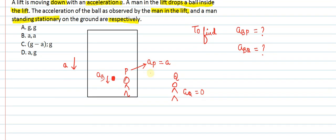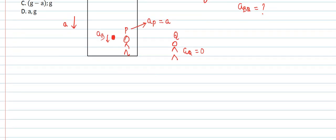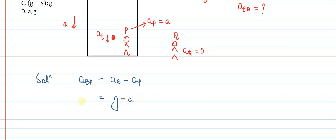Let's start with our solution. The acceleration of ball with respect to P equals the acceleration of ball with respect to ground minus the acceleration of P with respect to ground. The acceleration of ball with respect to ground as seen from the ground is 'g', and the acceleration of P with respect to ground is the lift's acceleration, which is 'a'. So, acceleration of ball with respect to P = g minus a.